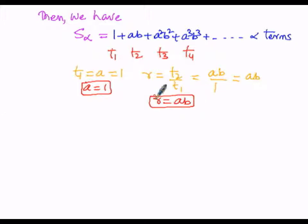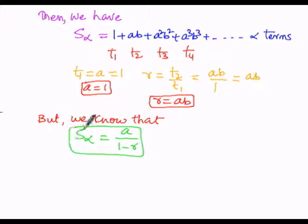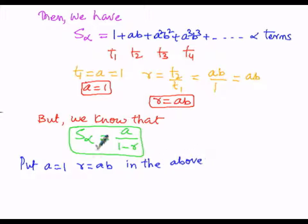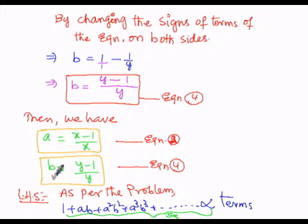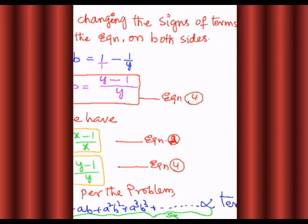So I got a equals 1 and r equals ab. We know that S of infinity is given by a divided by 1 minus r. Putting a equals 1 and r equals ab, we get S of infinity equals 1 divided by 1 minus ab. Let us call this equation number 5. Now we have the values a equals x minus 1 by x and b equals y minus 1 by y, so let us substitute these.